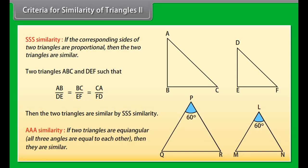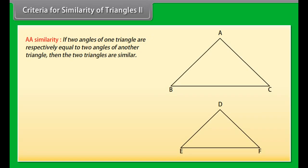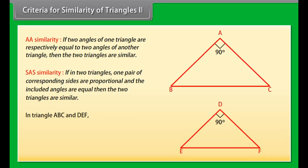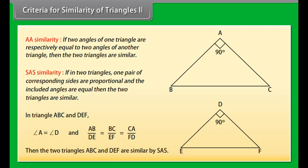AAA similarity: If two triangles are equi-angular, meaning all three angles are equal to each other, then they are similar. AA similarity: If two angles of one triangle are respectively equal to two angles of another triangle, then the two triangles are similar. SAS similarity: If in two triangles one pair of corresponding sides are proportional and the included angles are equal, then the two triangles are similar. In triangles ABC and DEF, if angle A equals angle D and AB upon DE equals BC upon EF equals CA upon FD, then triangles ABC and DEF are similar by SAS similarity.